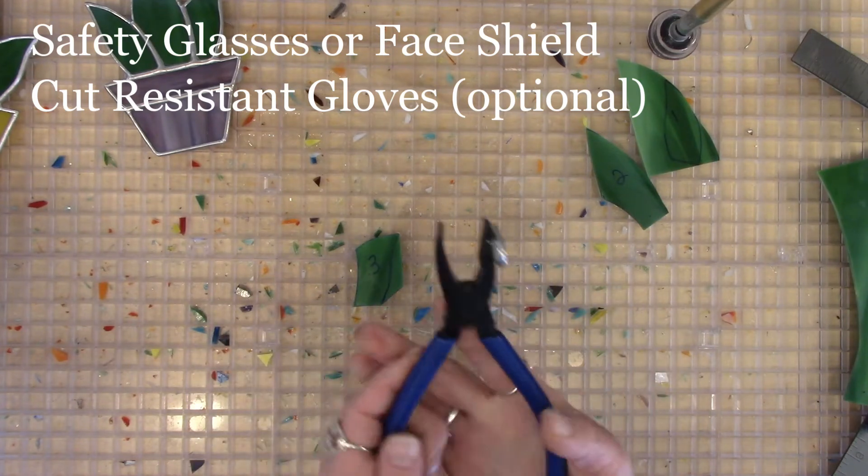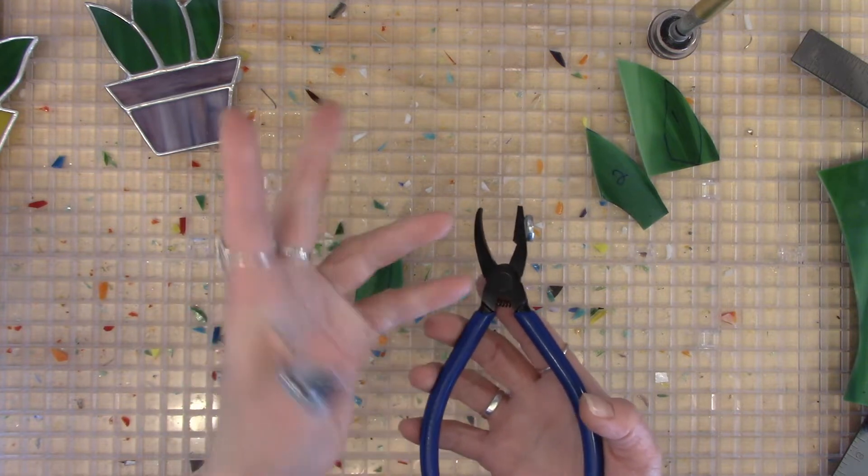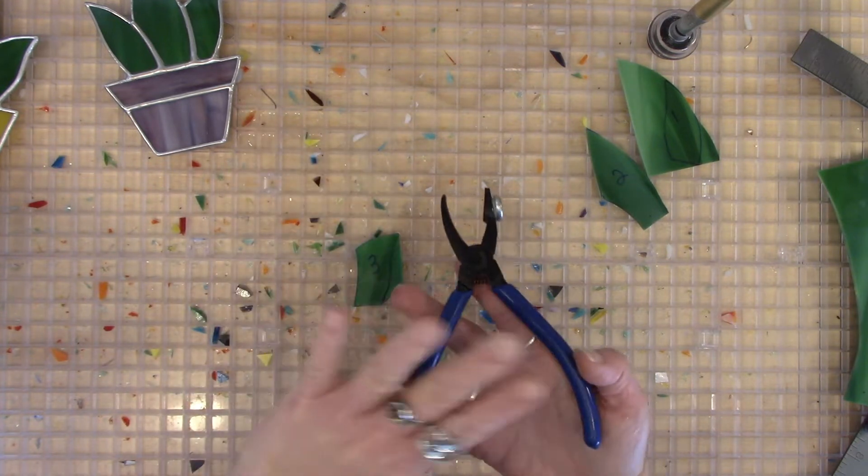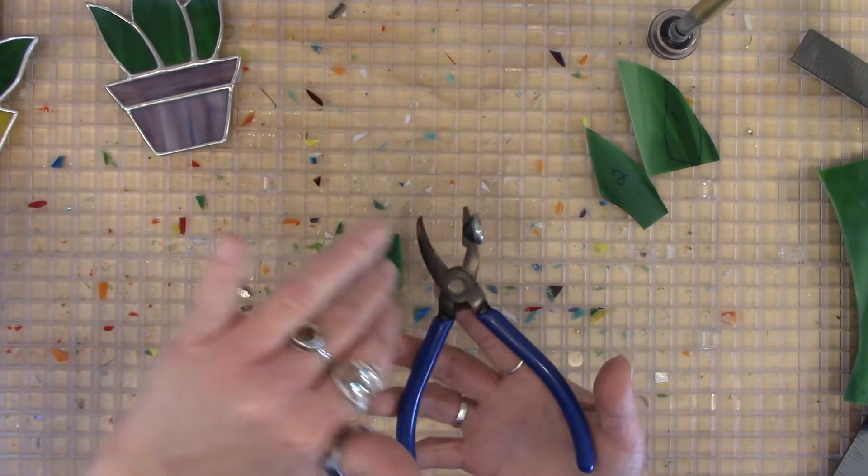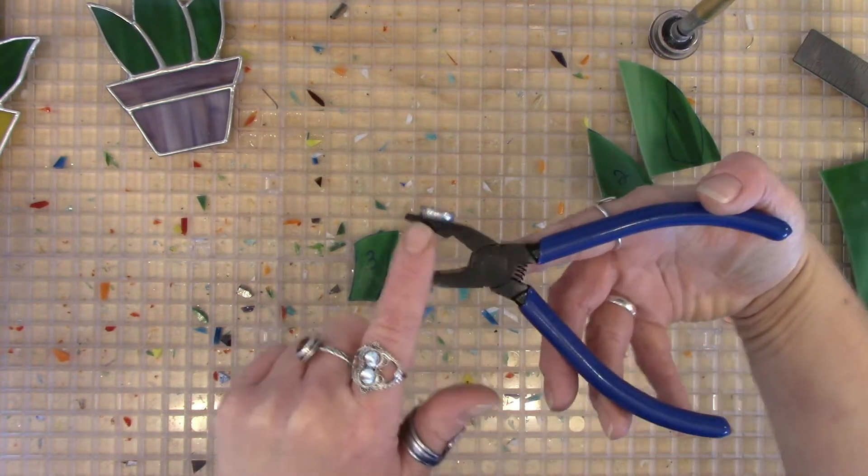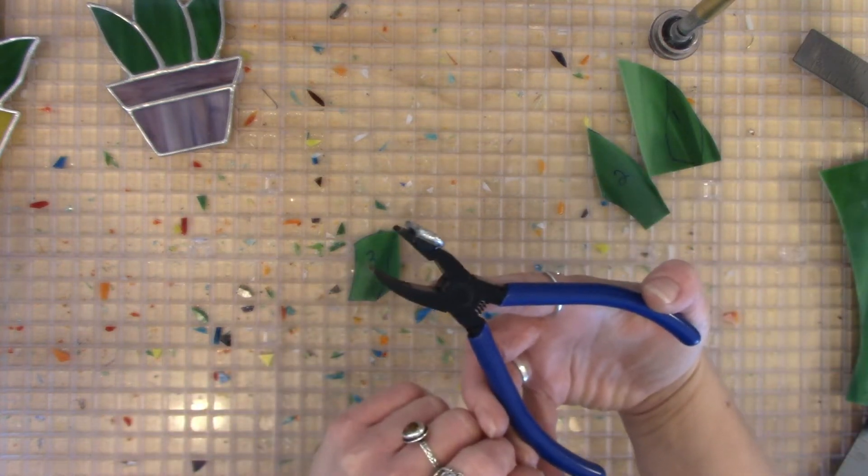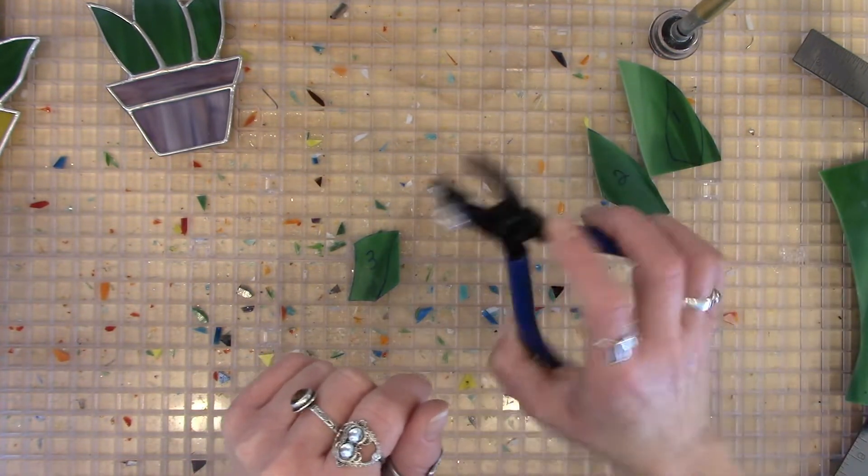This is your grozing pliers and you're going to use it to remove pieces that are too small for your running pliers to take off. It's technically called a breaking grozing pliers because you break with one side and grose with the other. Your flat side up is going to be your breaking side and your curved side up is your grozing side. You can put a little mark on the top so you know which is which.